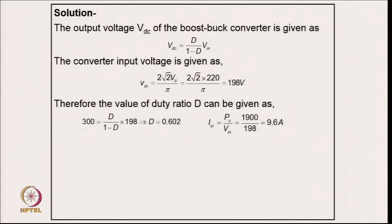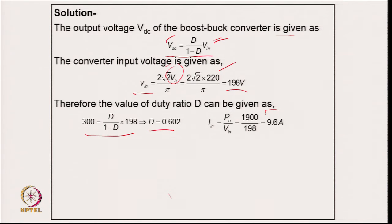Coming to the numerical part: for the Cuk converter, the output voltage relation gives V_dc in terms of input voltage D / (1 − D). The average input voltage after the diode rectifier is calculated from the supply RMS voltage: 198 V for 220 V RMS. The duty cycle comes to D = 0.602, which is above 0.5, confirming boost mode operation. The average input current is 1900 / 198 = 9.6 A.